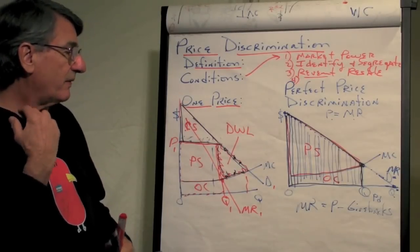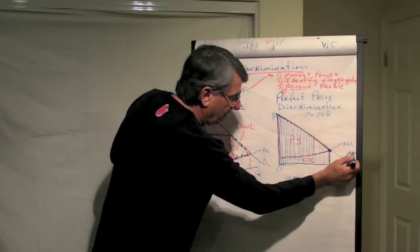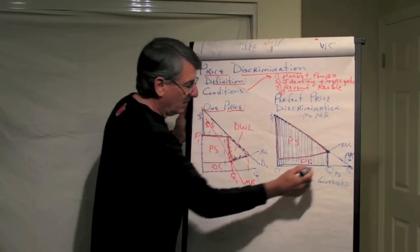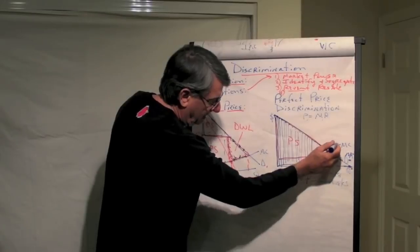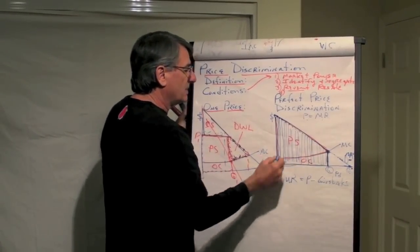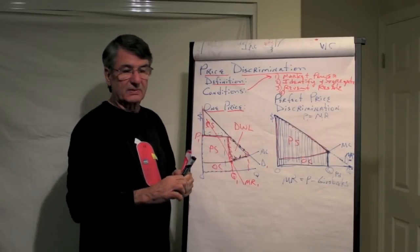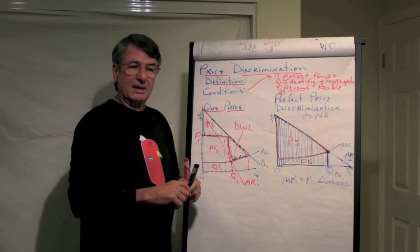So that's it. Perfect price discrimination. They charge everybody at the highest price they are willing to pay. Marginal revenue is the same as demand. They will produce until the demand, that is, marginal revenue is equal to the marginal cost here. And it greatly increases producer surplus. But consumer surplus is gone. So say goodbye.